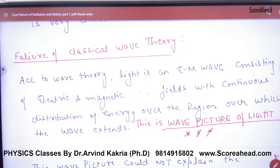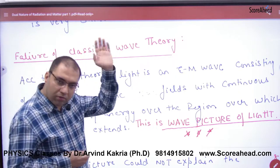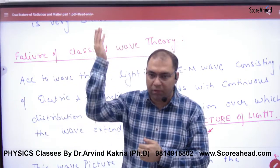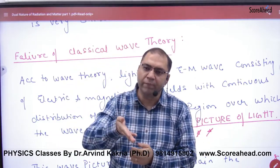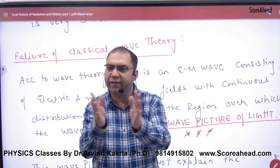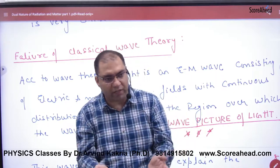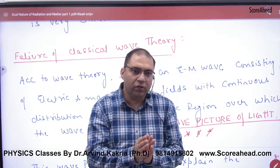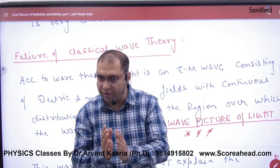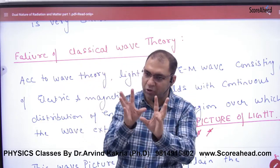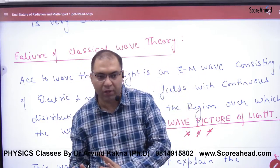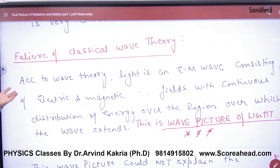The next topic is the failure of classical wave theory. The scientists working on this have believed that light or electromagnetic waves have a wave nature. This is called the wave picture — they are seeing a wave picture and giving their answers. So the important topic here is the failure of classical wave theory.